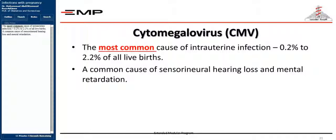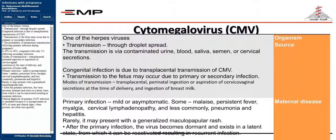Cytomegalovirus (CMV) is the most common cause of intrauterine infection, occurring in 0.2% to 2.2% of all live births, and is a common cause of sensorineural hearing loss and mental retardation. It is one of the herpes viruses, transmitted through droplet spread. Congenital infection is due to transplacental transmission. Transmission to the fetus may occur due to primary or secondary infection. The probability of intrauterine transmission following primary infection is 30–40%, compared with only 1% following secondary infection. Modes of transmission include transplacental, perinatal ingestion or aspiration of cervicovaginal secretions at delivery, and ingestion of breast milk.